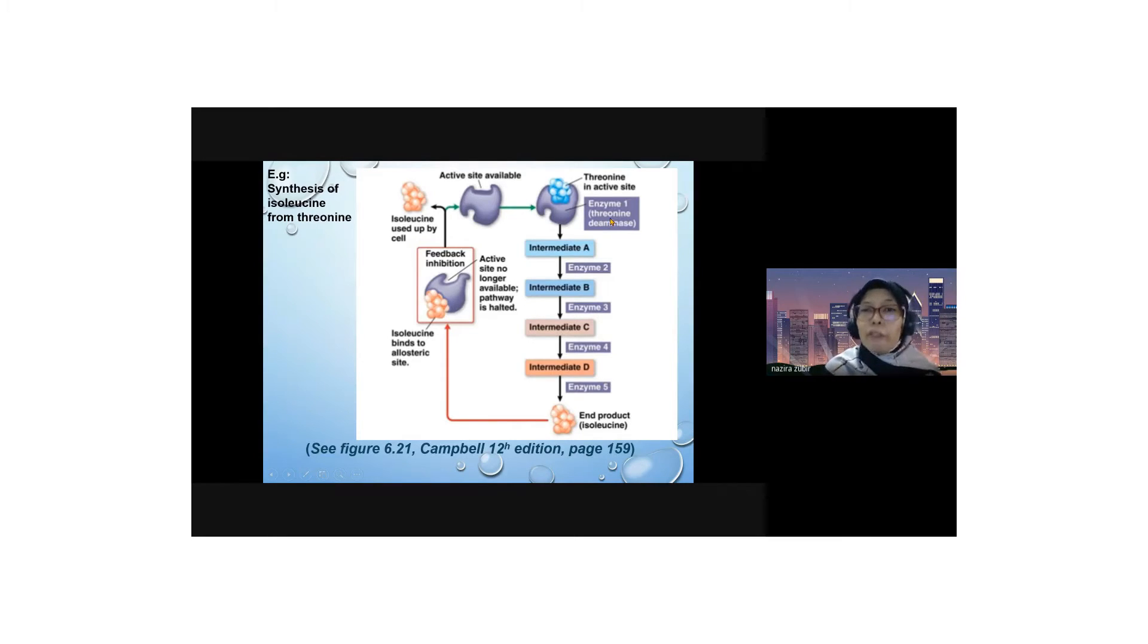In feedback inhibition, threonine as the substrate binds to the active site and produces all the intermediates and finally the end product. However, the end product isoleucine acts as an inhibitor.